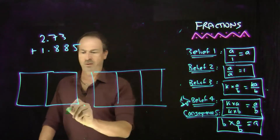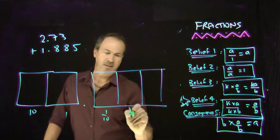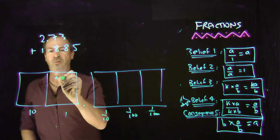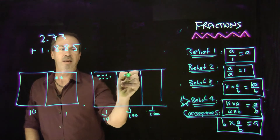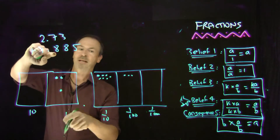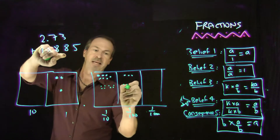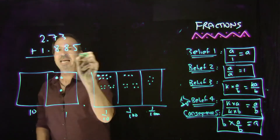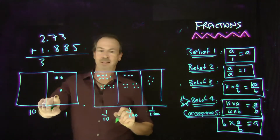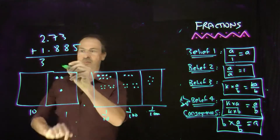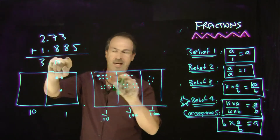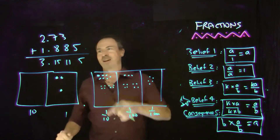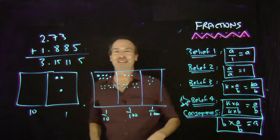I'm saying 2.73: 2 ones, 7 tenths, 3 hundredths. Plus 1.885: 1 one, 8 tenths, 8 hundredths, 5 thousandths. As you can see I really have 3 ones, 15 tenths, 11 hundredths, and 5 thousandths. The raw answer is 3.15115 — I just wrote 3, then 15, then 11, then 5. Beautiful.